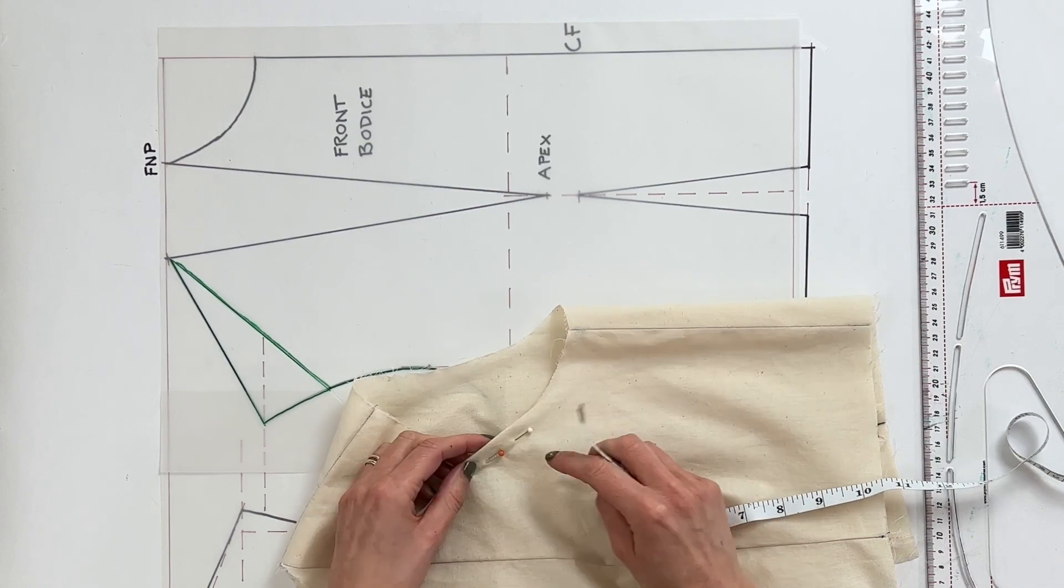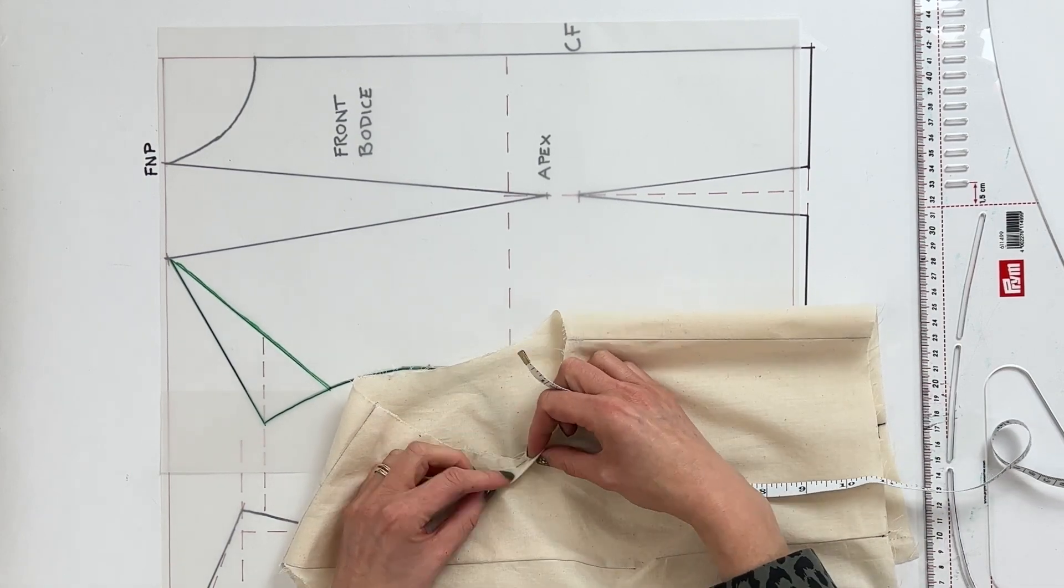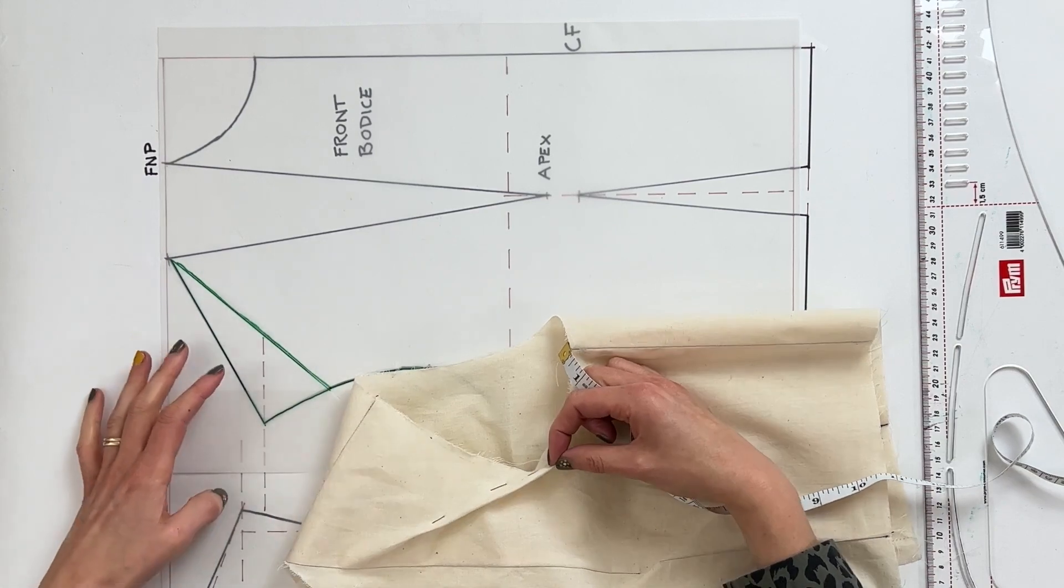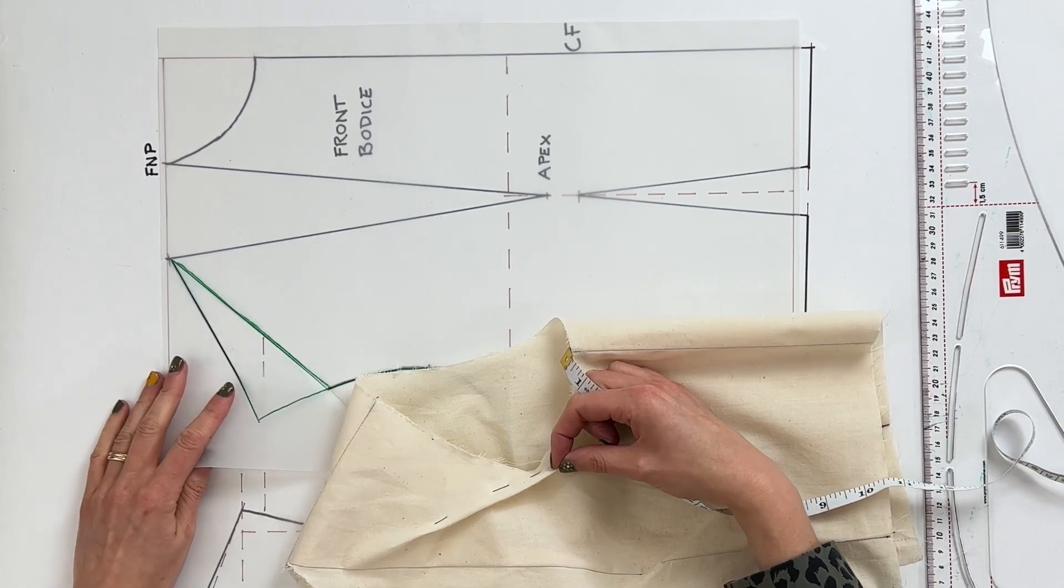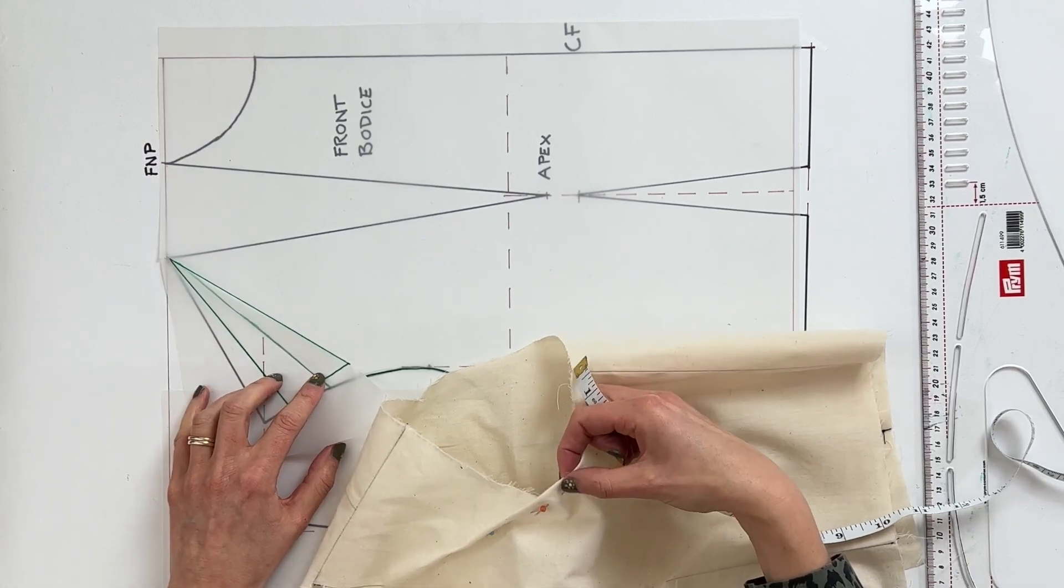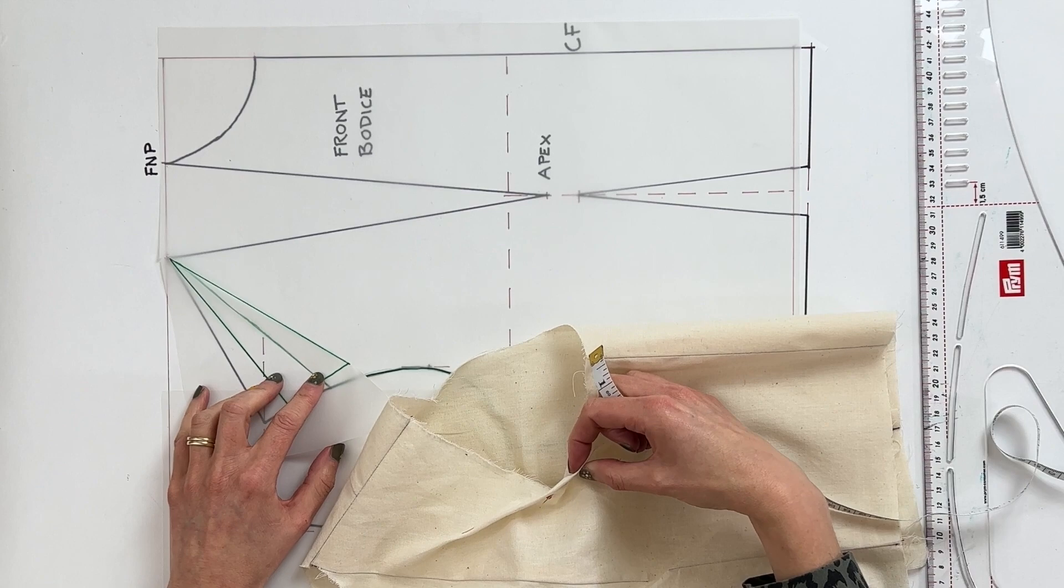So for me it's one centimeter which means that overall I want to remove two centimeters of volume from the armscye at this point. So effectively I want to drop this down by two centimeters to ensure I remove the two centimeters at that point.